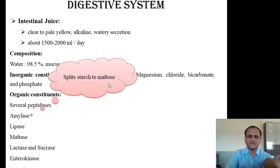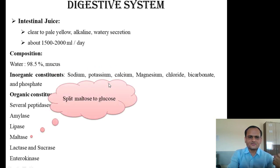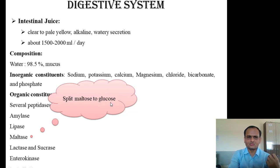Next is lipase. As the name suggests, lipase acts on lipids — triglycerides and fats are broken down into lower glycerides, fatty acids, and glycerol. Maltase splits maltose into glucose. So amylase converts starch to maltose, and maltase completes the digestion by converting maltose to glucose. Once carbohydrates are broken down into monosaccharides like glucose, they are ready for absorption through the intestinal mucosa.